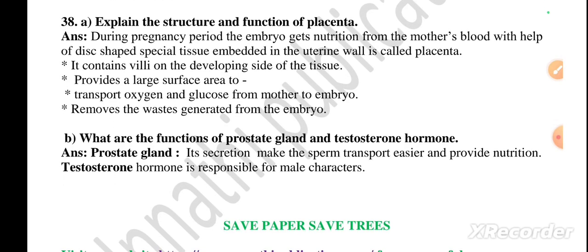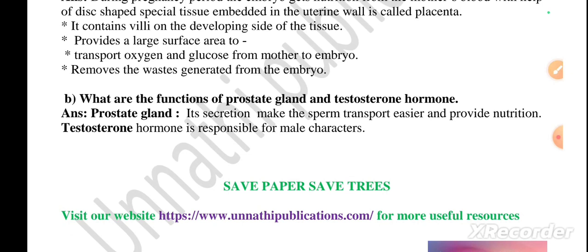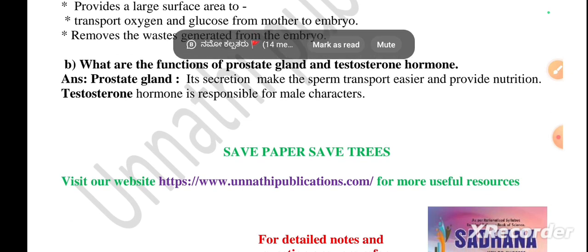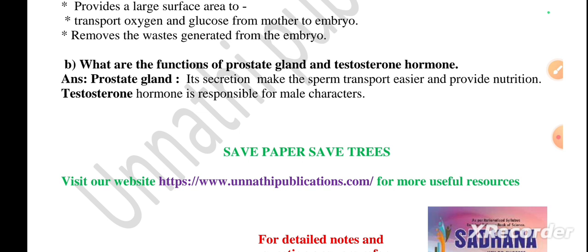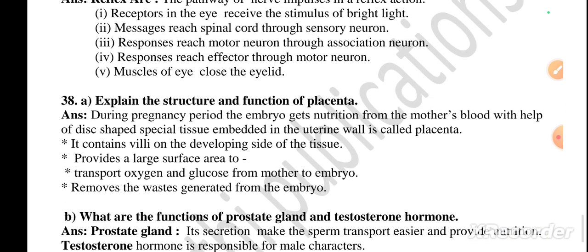Question 38A: explain the structure and function of placenta. During pregnancy, the embryo gets nutrition from the mother's blood with the help of a disc-shaped special tissue embedded in the uterine wall called placenta. It contains villi on the developing side of the tissue, which provides a large surface area to transport oxygen and glucose from mother to embryo, and removes waste generated by the embryo. Question 38B: functions of the prostate gland and testosterone hormone. The prostate gland's secretion makes sperm transport easier and provides nutrition. Testosterone hormone is responsible for male characteristics at puberty.